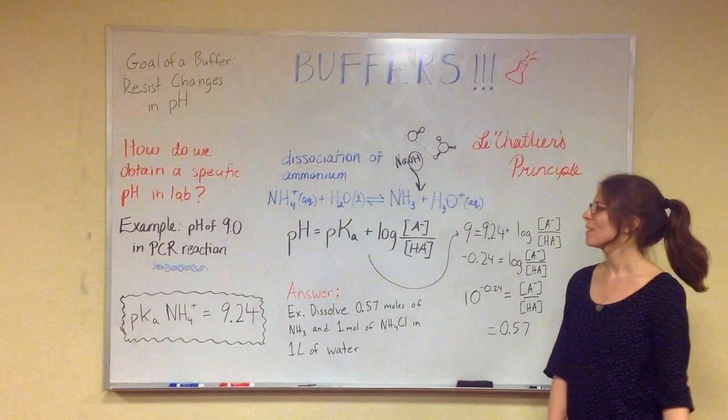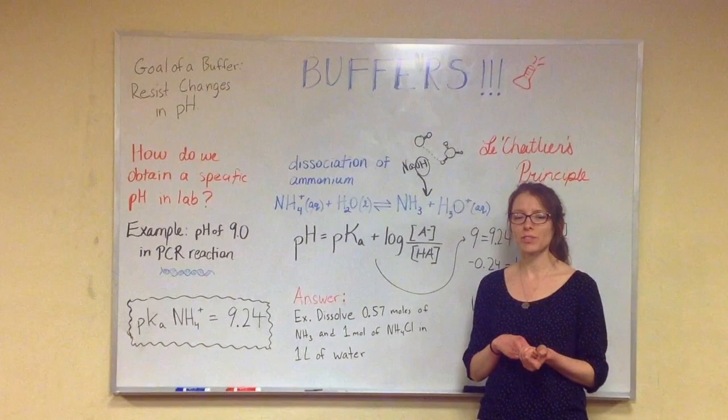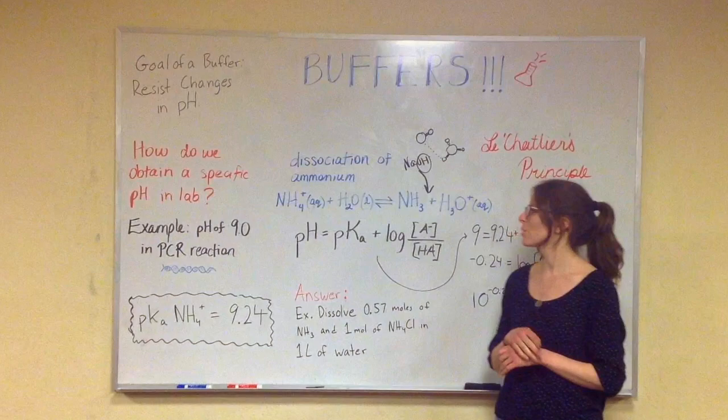All right. So now we're going to look at a second part of this question. What if we needed to do a PCR reaction with shorter fragments and needed a pH of 8.4?